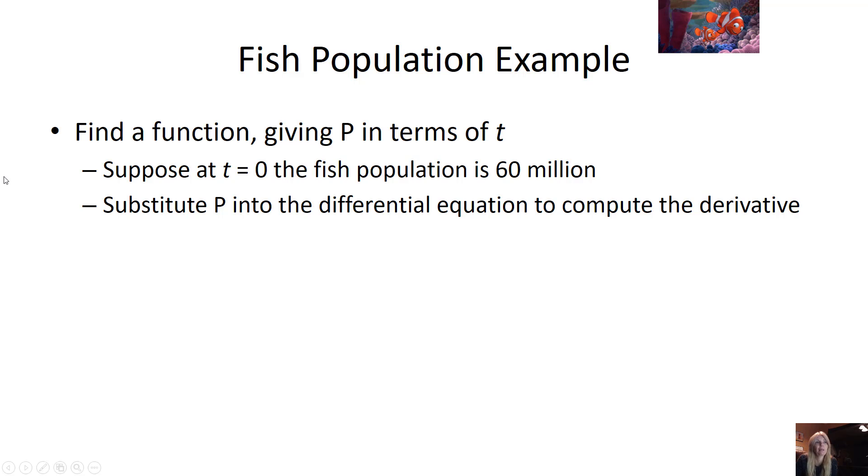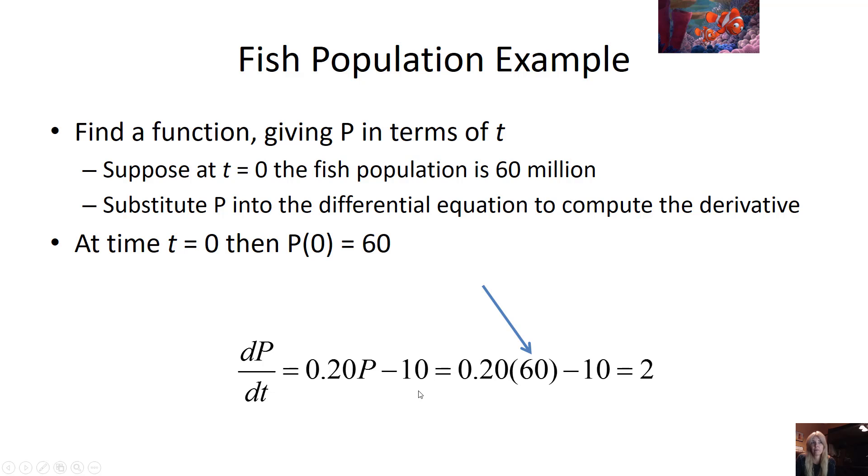I can substitute my P into the differential equation to compute the derivative. So in other words, again, this would be like saying p of t. I'm plugging in p of 0, which is 60. And then this gives me a number 2, which means what?